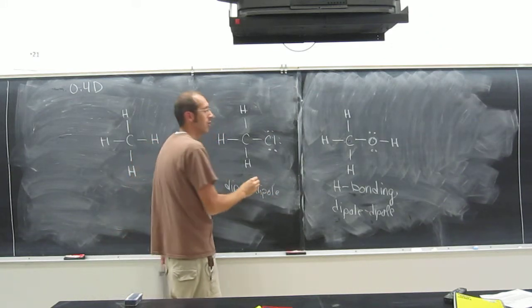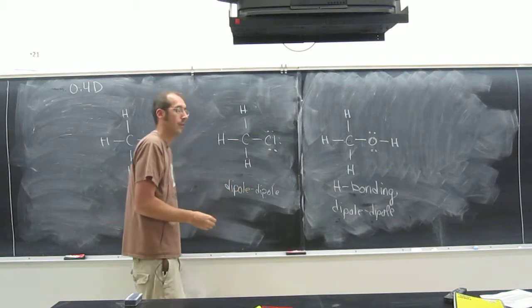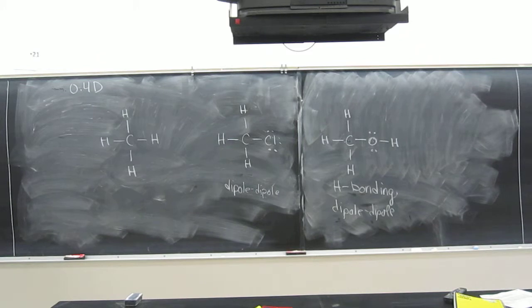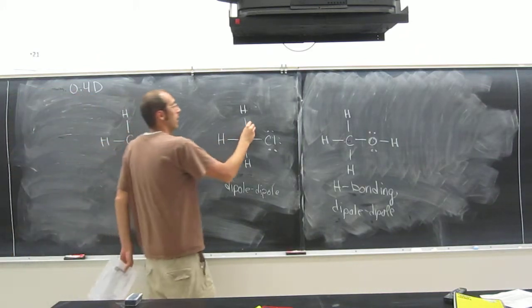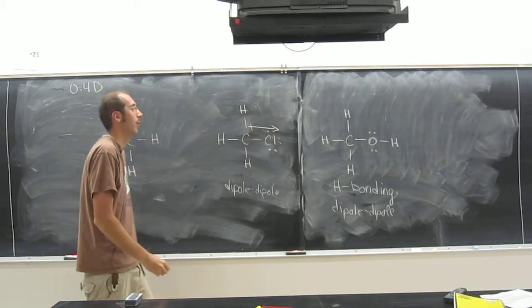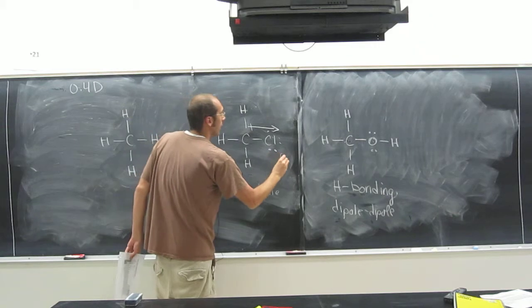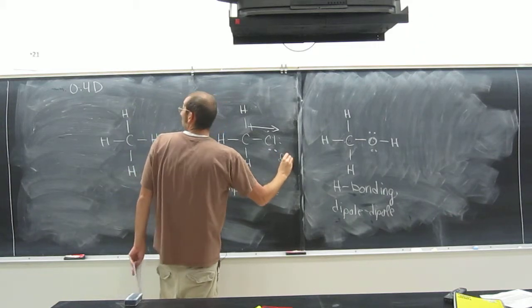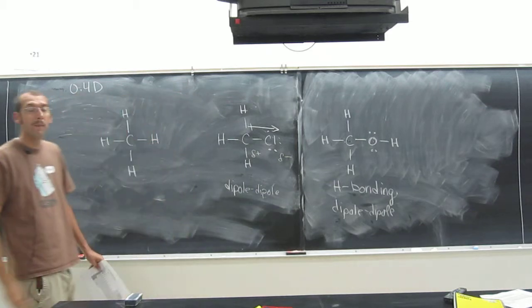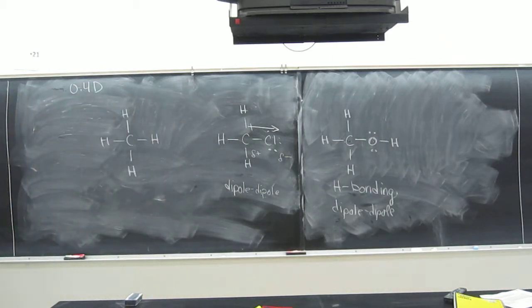If they asked you to show the dipole arrow, the one with the bigger electronegativity is stronger. Remember the tug-of-war thing we were talking about? So this one would look like that. Or you could draw it like this. Partial negative, partial positive. Oh, you made it. We're all waiting for you.